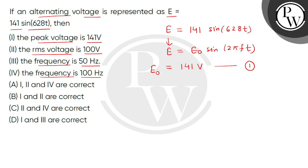So it means statement number 1 is correct. Statement number 2 is given as RMS voltage. RMS voltage, meaning root mean square voltage, is given as E naught divided by square root of 2, which equals 141 divided by 1.41, approximately 100 volts.